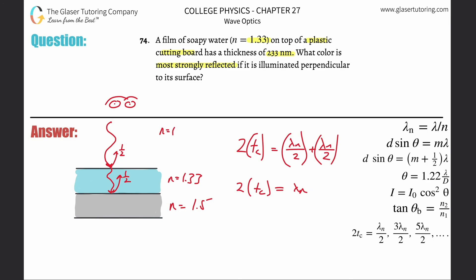To find the wavelength in the soapy water, just plug in the thickness. The thickness was 233 nanometers. This is the wavelength in the soap: 2 times 233, and that works out to be about 466 nanometers. That's the wavelength of the light in the soap.